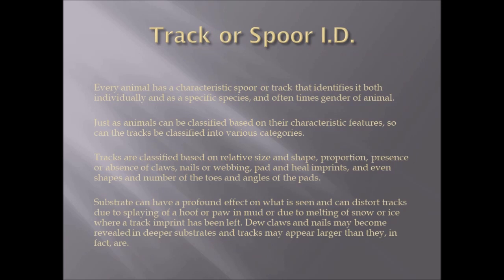Every animal has a characteristic spoor or track that identifies it both individually and as a specific species, and often the gender of the animal can be determined. Just as animals can be classified based on their characteristic features, so too can tracks be classified into various categories. Tracks are classified based on relative size and shape, proportion, presence or absence of claws, nails or webbing, pad and heel imprints, shapes and number of toes, and the angles of the pads.